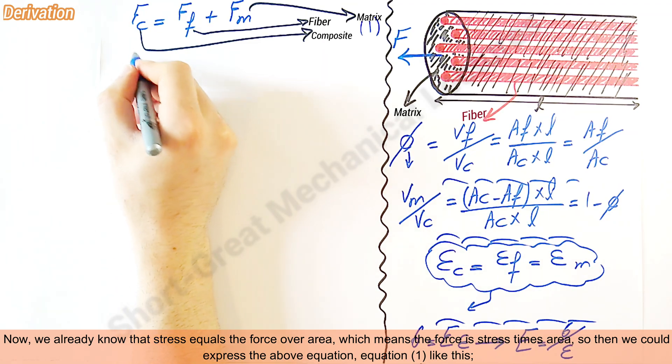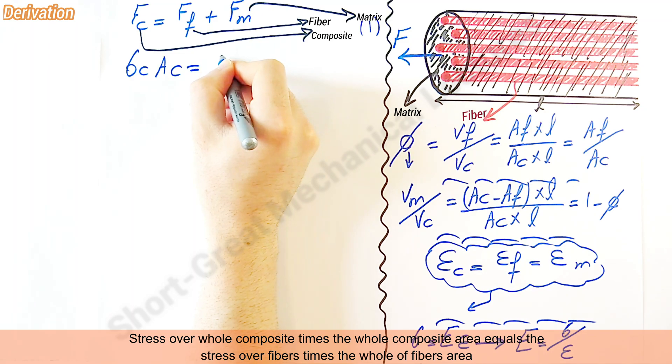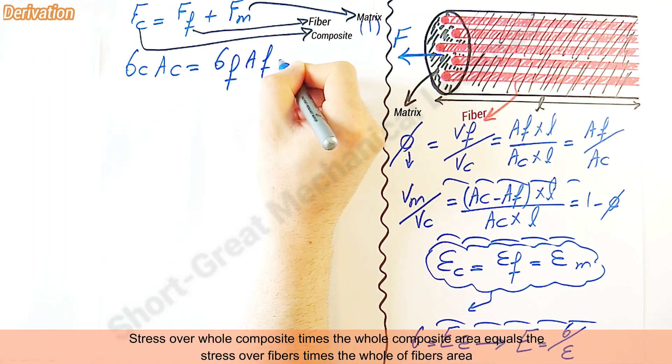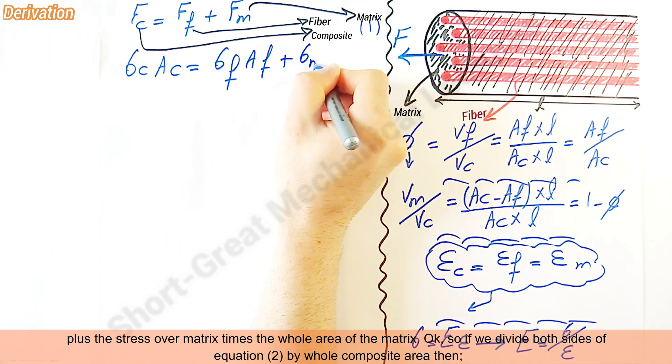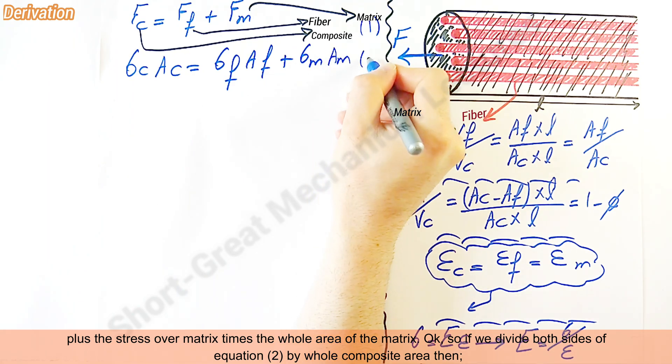Equation 1 like this: Stress over whole composite times the whole composite area equals the stress over fibers times the whole of fibers area plus the stress over matrix times the whole area of the matrix.